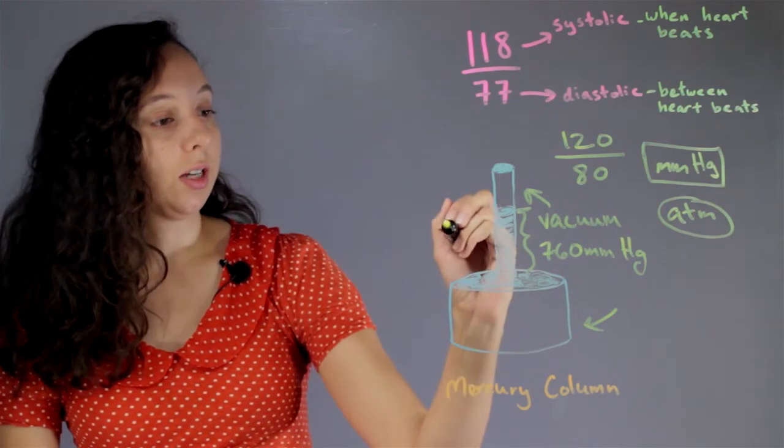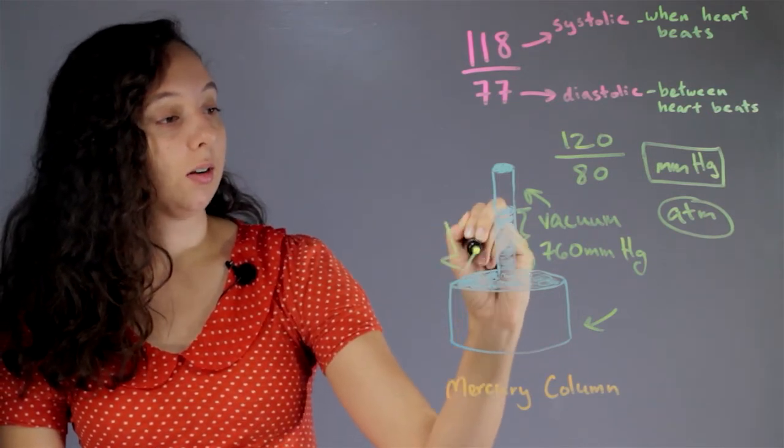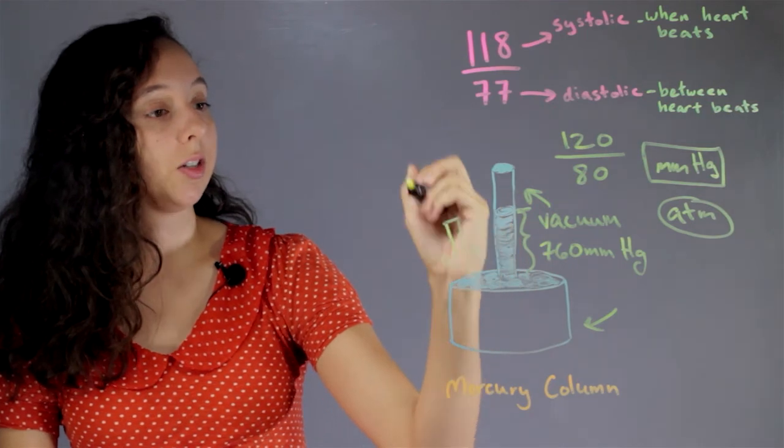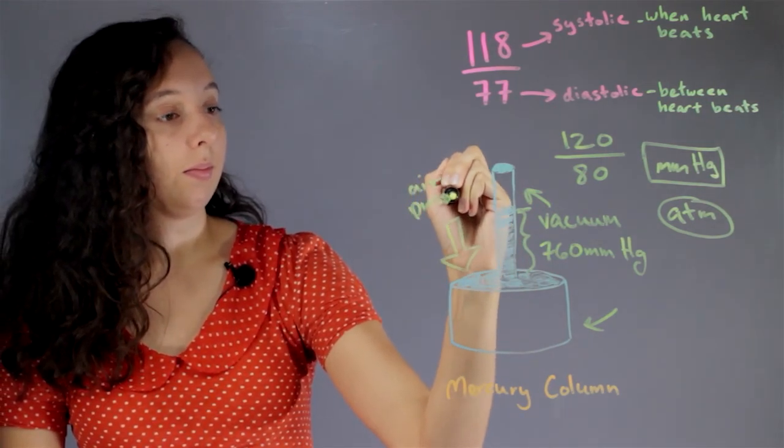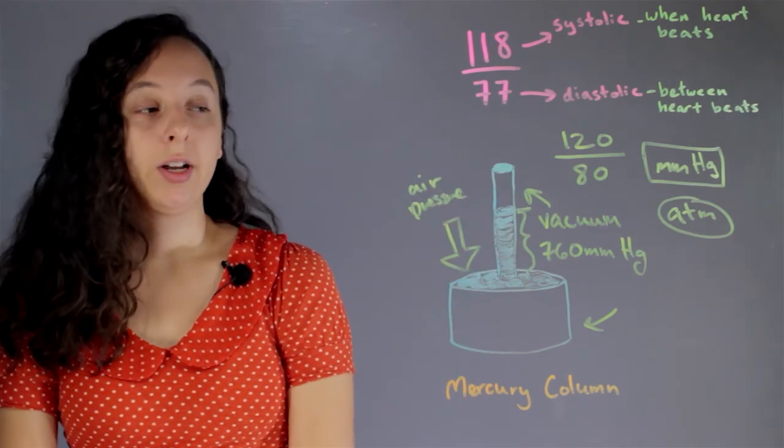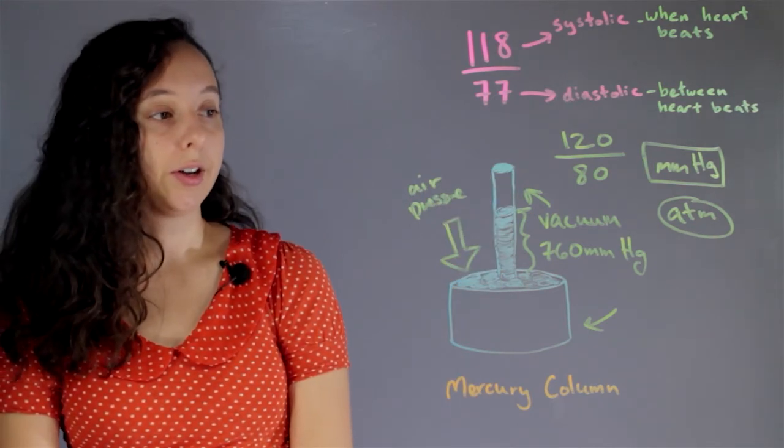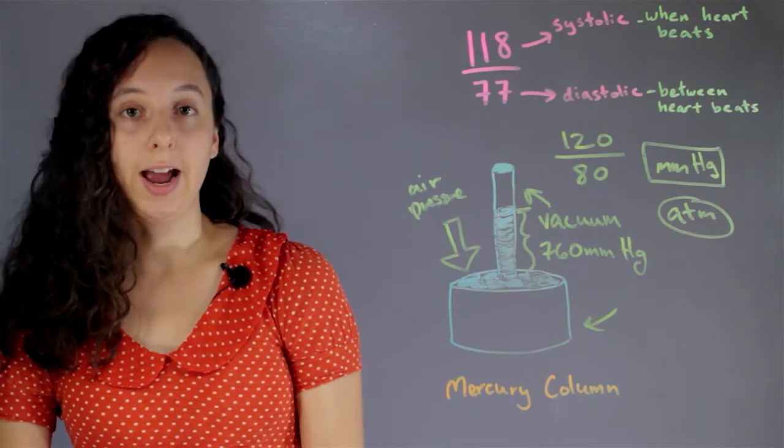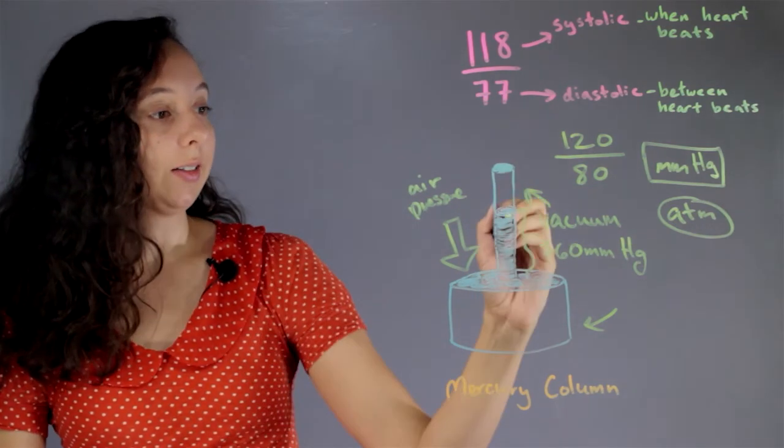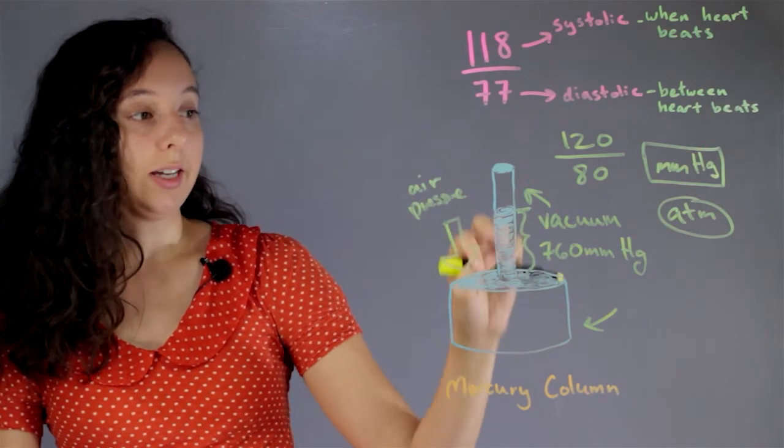And it actually stops because at 760 millimeters, the air pressure pressing down is enough to balance out the gravitational pressure of this mercury wanting to come down. So at exactly this length, these two things cancel out.